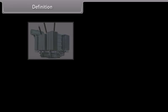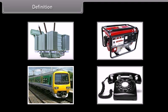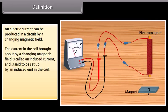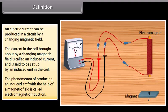Definition. In our everyday life, electromagnetic induction plays a vital role. Transformer, generator, train, and telephone are some examples which work on the principle of electromagnetic induction. An electric current can be produced in a circuit by a changing magnetic field. The current in the coil brought about by a changing magnetic field is called an induced current, set up by an induced EMF in the coil. The phenomenon of producing an induced EMF with the help of a magnetic field is called electromagnetic induction.